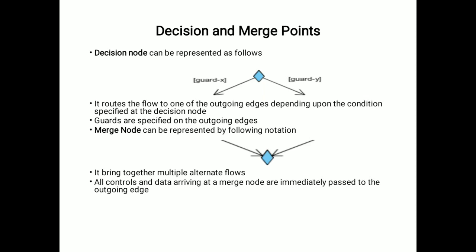Merge node can be represented by following notations. Two incomings come to a particular diamond, also called a merge. For merging also, this diamond is used. It brings together multiple alternative flows. All controls and data arriving at a merge node are immediately passed to the outgoing edge.